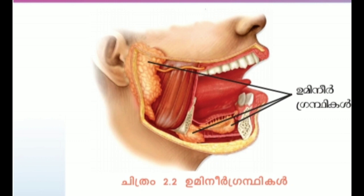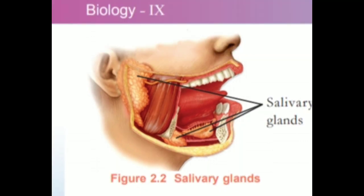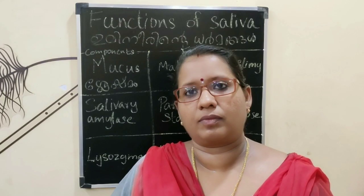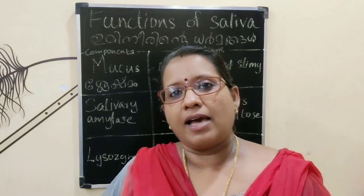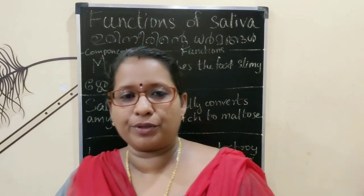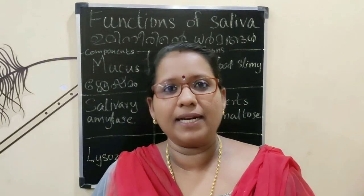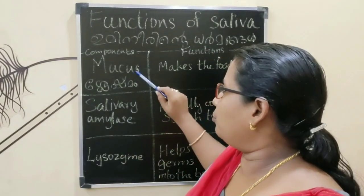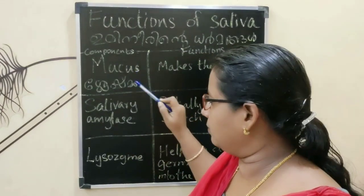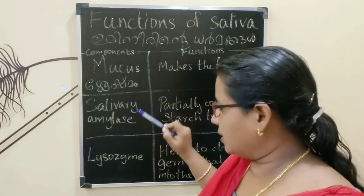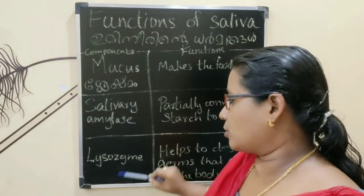There are three pairs of salivary glands in the mouth, and these salivary glands secrete saliva. Saliva contains mucus, salivary amylase, and lysozyme.